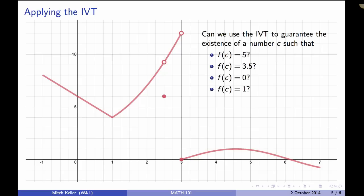So let's apply the intermediate value theorem to this function. Could we use the intermediate value theorem to guarantee the existence of a number c such that f(c) equals 5? Well, of course, you can look at the graph and say there's a couple spots where f(c) equals 5, but how could we use the intermediate value theorem? Well, we notice here that f(0) equals 6, and f(1) equals 4, and 5 is between 4 and 6.